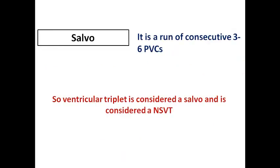Another definition is the 'salvo' — a run of 3 to 6 consecutive PVCs or ventricular ectopics. A ventricular triplet is considered a salvo and also non-sustained VT. We don't commonly use the term salvo, but it appears in literature and we need to be familiar with it. A salvo is essentially a short run of non-sustained VT of 3 to 6 ventricular ectopics.